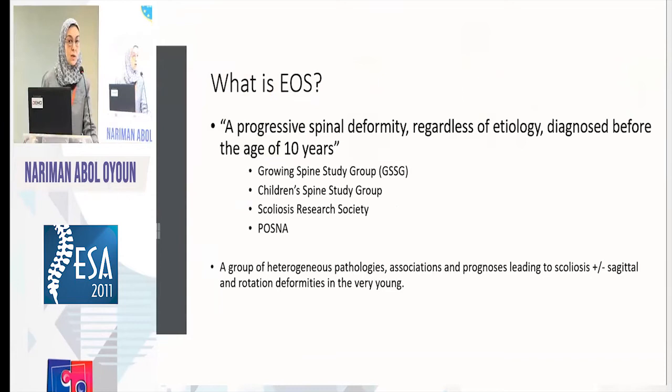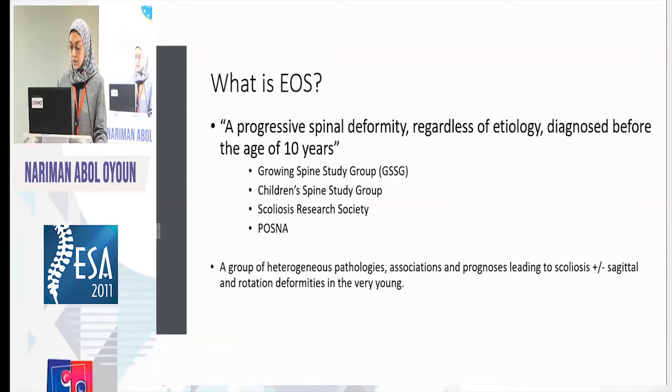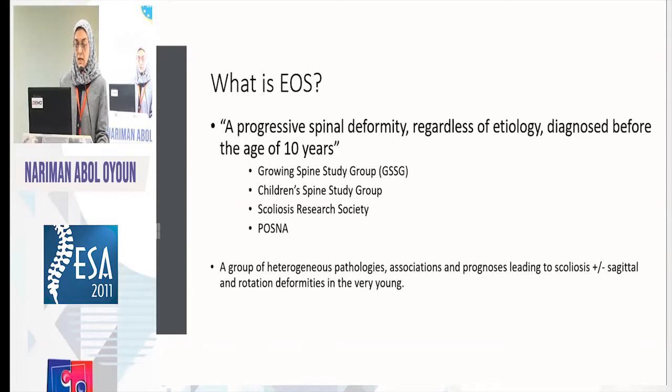I'd like to introduce the term early onset scoliosis because it has developed over time. It is the progressive spinal deformity, regardless of the etiology, in a child younger than 10 years of age. This definition has been adopted by so many societies dealing with pediatric scoliosis. It is a group of heterogeneous pathologies that share age in common, but are very different with different associations, comorbidities, prognoses, and natural history.